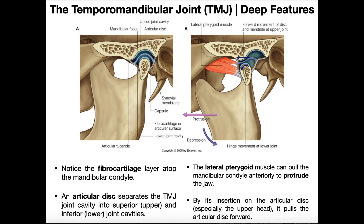That brings us to our final slide, looking at deep features of the TMJ and one major movement: depression of the mandible — which is not just a simple translatory movement inferiorly, but involves both rotation and protrusion. Here is the mandibular condyle in the mandibular fossa of the temporal bone. We can see the articular disc and two separate joint cavities — upper and lower — created by that disc.